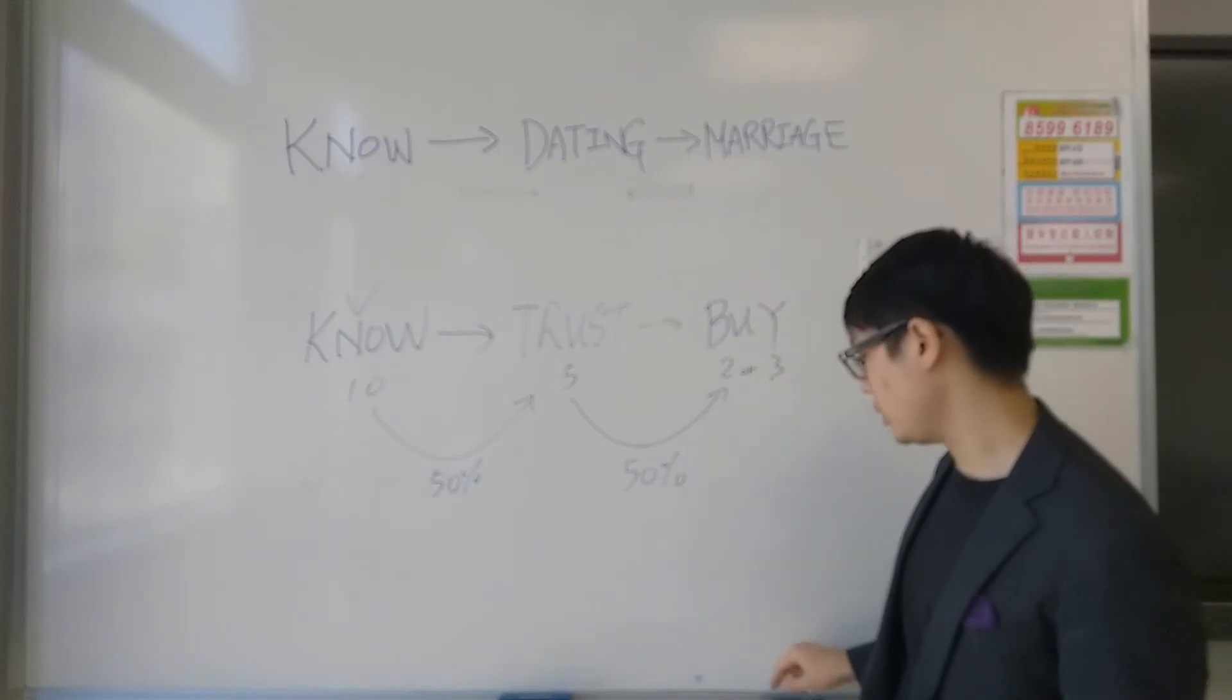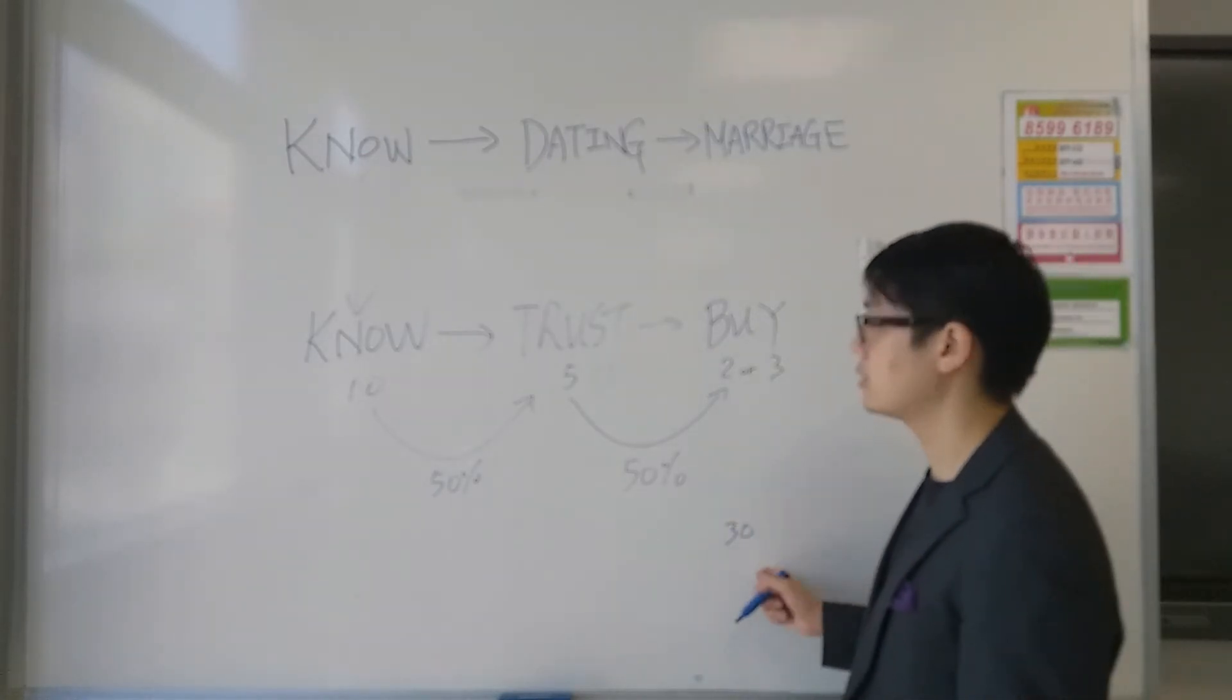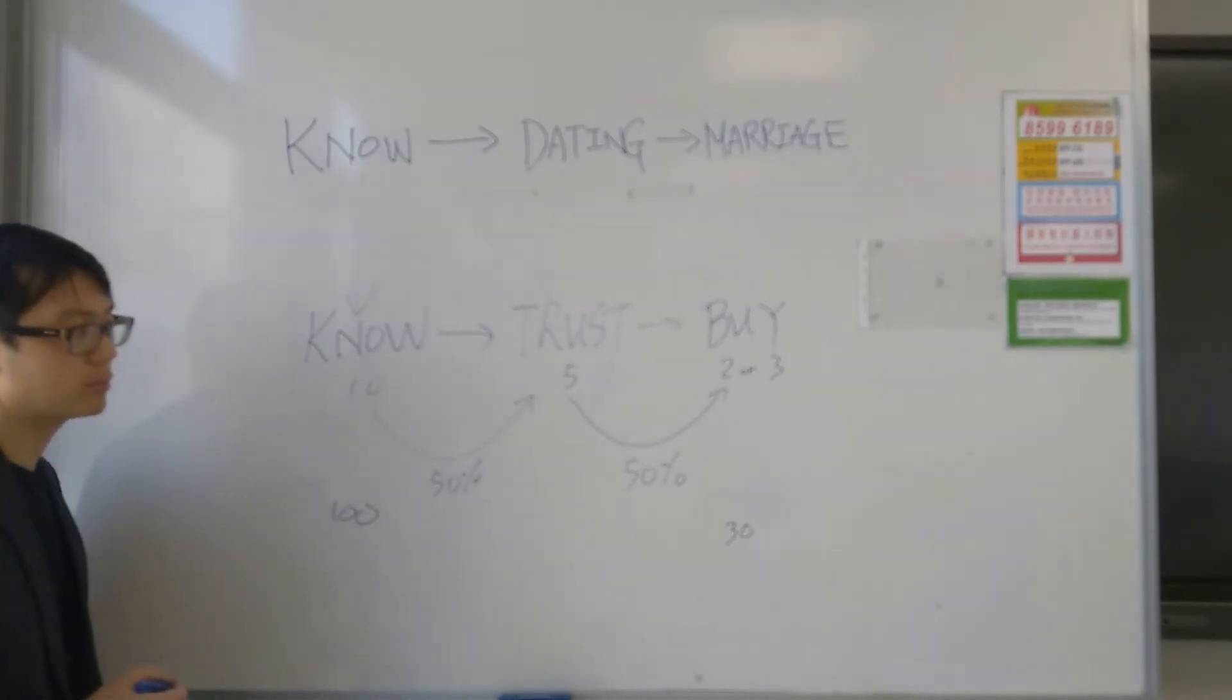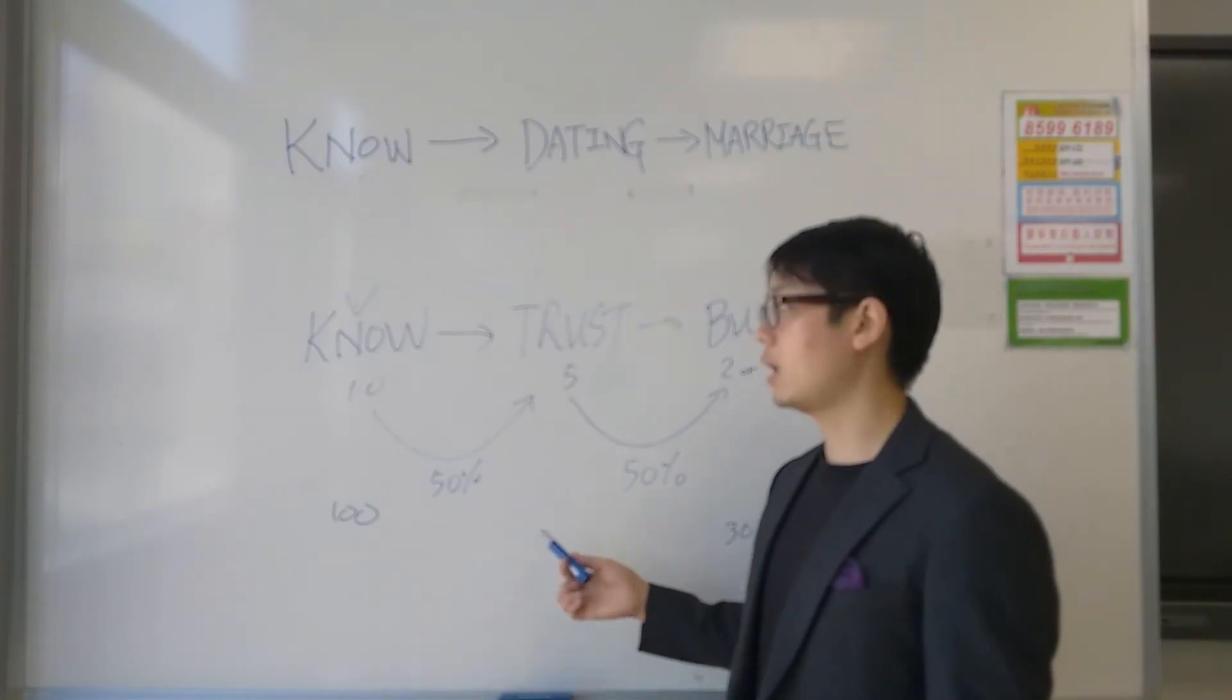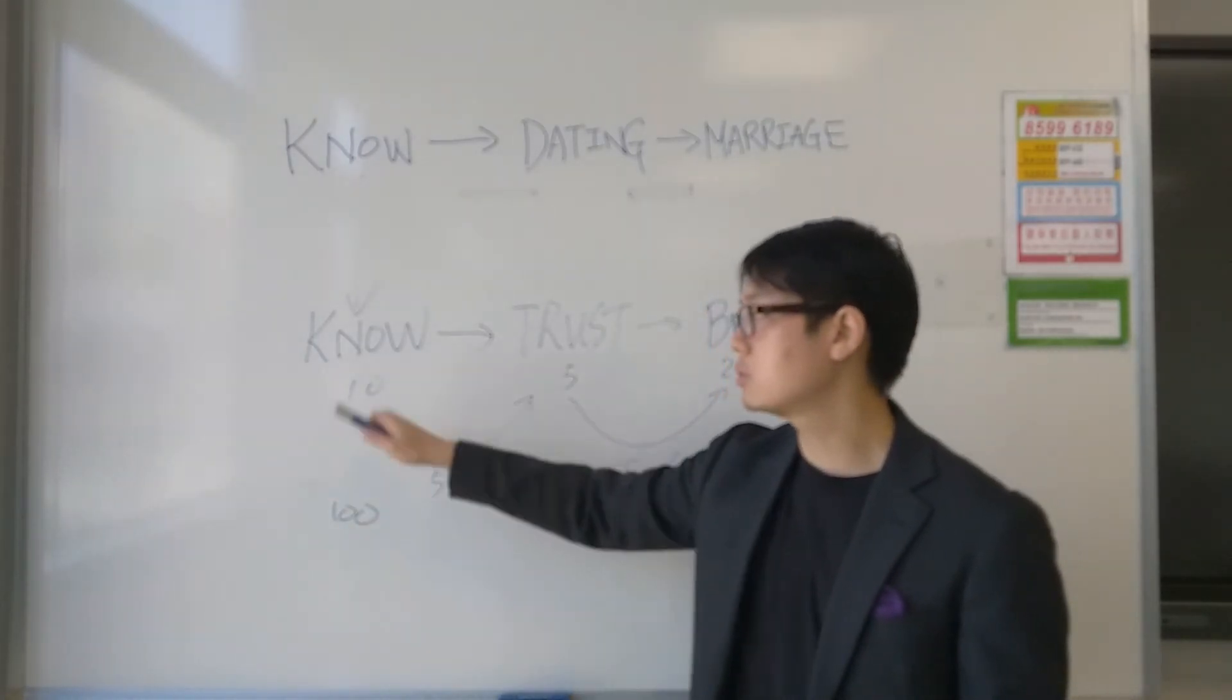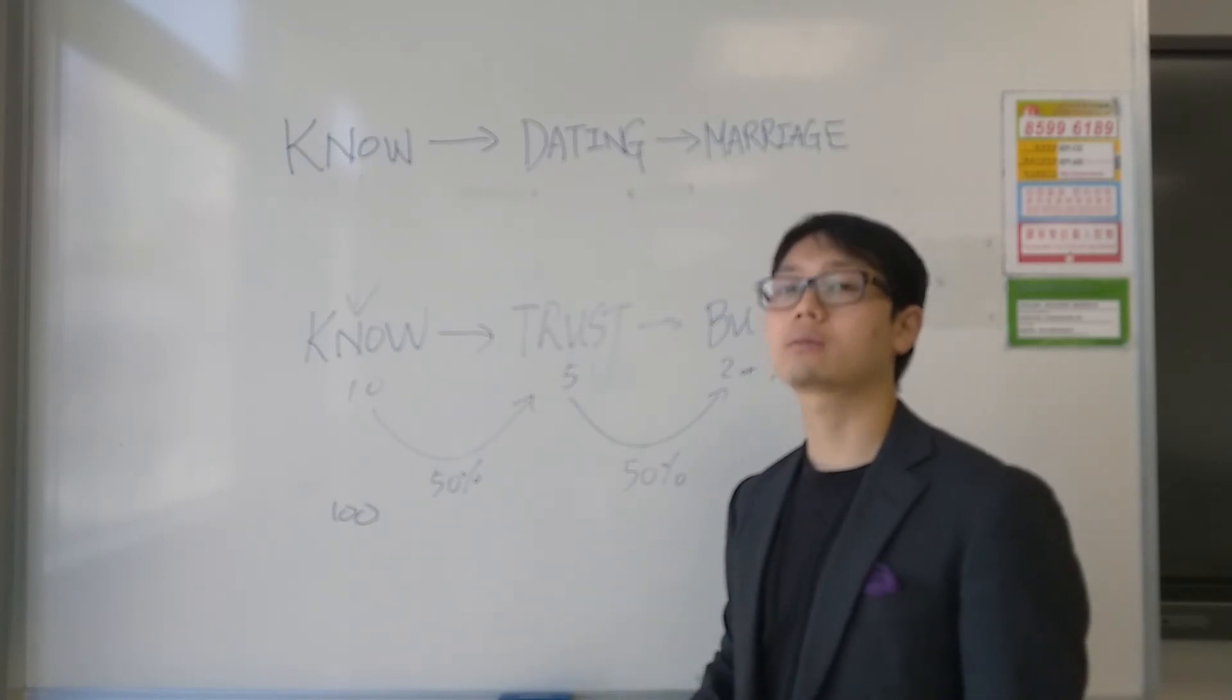If you want this number to increase, say, increase to 30 people to buy from you, what that means is, the number of people who know about you also has to be increased by 10 times as well. And this is exactly the most important principle. Get as many people to know you, know about your business and not to let yourself be that invisible man that they don't know about.